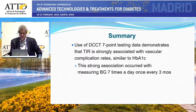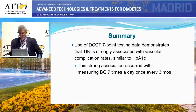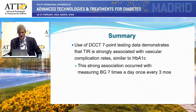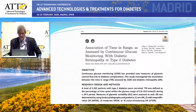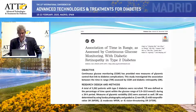To summarize: DCCT seven-point testing demonstrated time in range is strongly associated with vascular complication rates, somewhat similar to the pattern we see with hemoglobin A1C — and this is just one day of seven measurements every three months. We might think that association would be even stronger if we had CGM measured longitudinally with measurements every day.